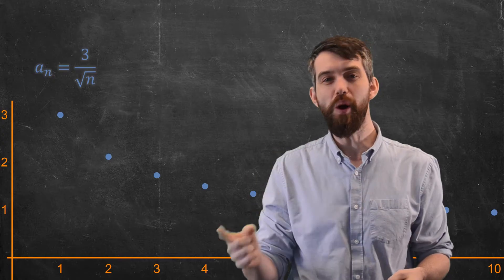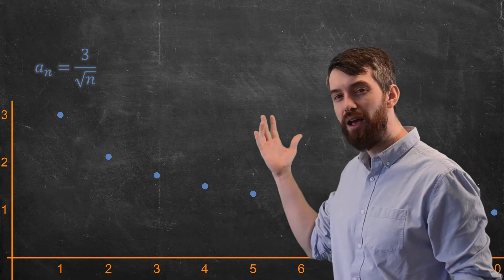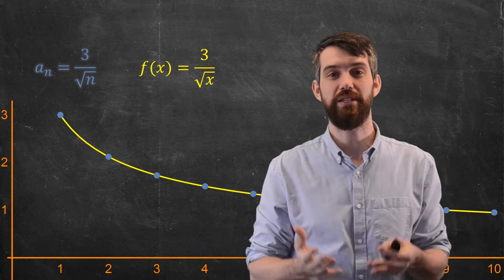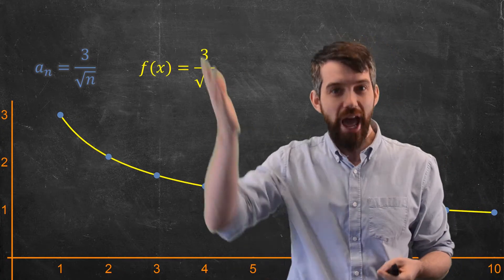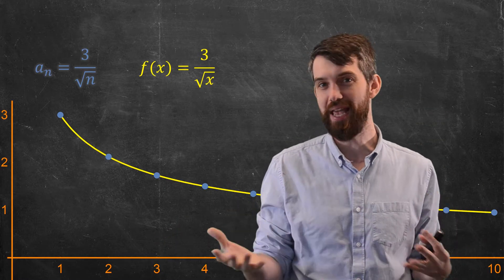But there is a corresponding function of a real variable. It's the function 3 divided by square root, not of n, but of x. And it looks like this, the entire thing filled in. So the graph of a function, the graph of a sequence, are in many ways the same.